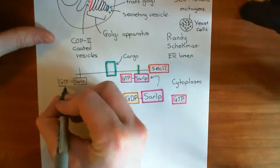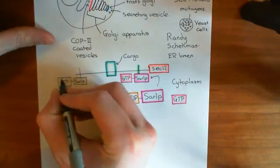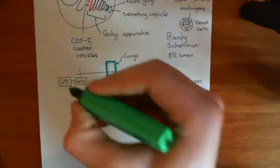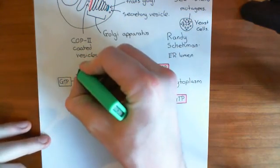Right, so this is our activated SAR 1p protein, which has this hydrophobic tail, which allows it to sit in the membrane of the endoplasmic reticulum.